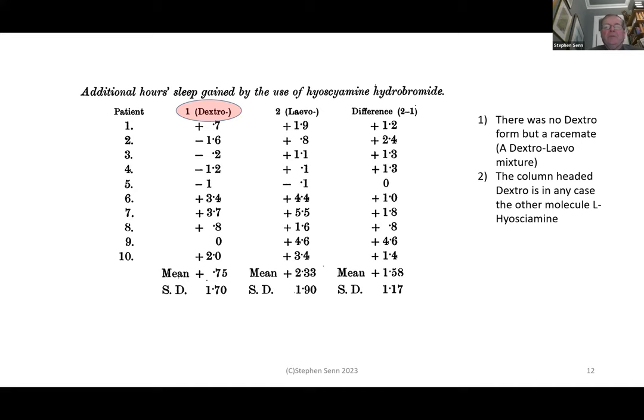The data show differences to control — positive values mean the patient slept better under that treatment than in the control nights — along with the difference between the two treatments in the final column. However, Student made a mistake: there was no dextro form, but a racemate — a dextro-levo mixture — so the treatments were not quite what he thought. And in any case, he mislabeled the column.